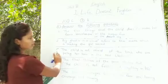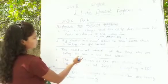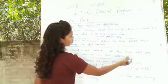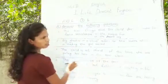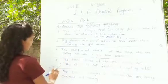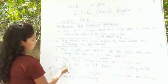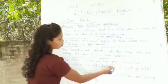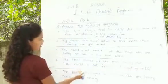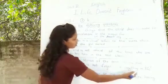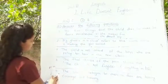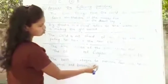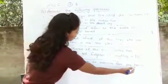For your third question, the answer is, the child is not afraid of the boys who are pulling her hair in the new classroom. This is your third answer. And for your fourth answer, the final stanza of the poem states that the child is not frightened of anything in life. For your last question, the answer is, the best strategies to overcome fear are having courage and bravery.